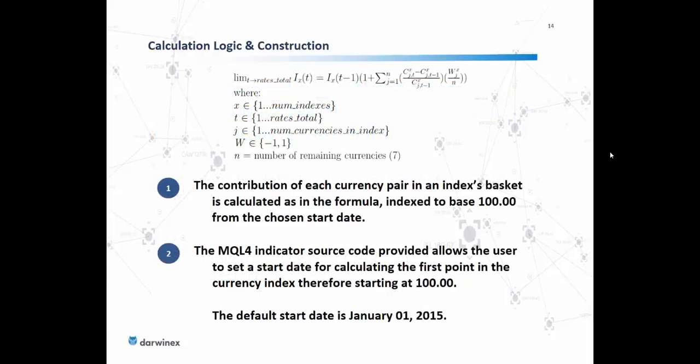The contribution of each currency pair in an index's basket is calculated as described, and in our implementation it is indexed to base 100 from a chosen start date. The source code allows the user to set the start date for calculating the first point in the currency index, therefore starting at base 100. A default start date we've set is January 1, 2015, but you are welcome to change that to whatever you wish — there's no restriction on the start date.